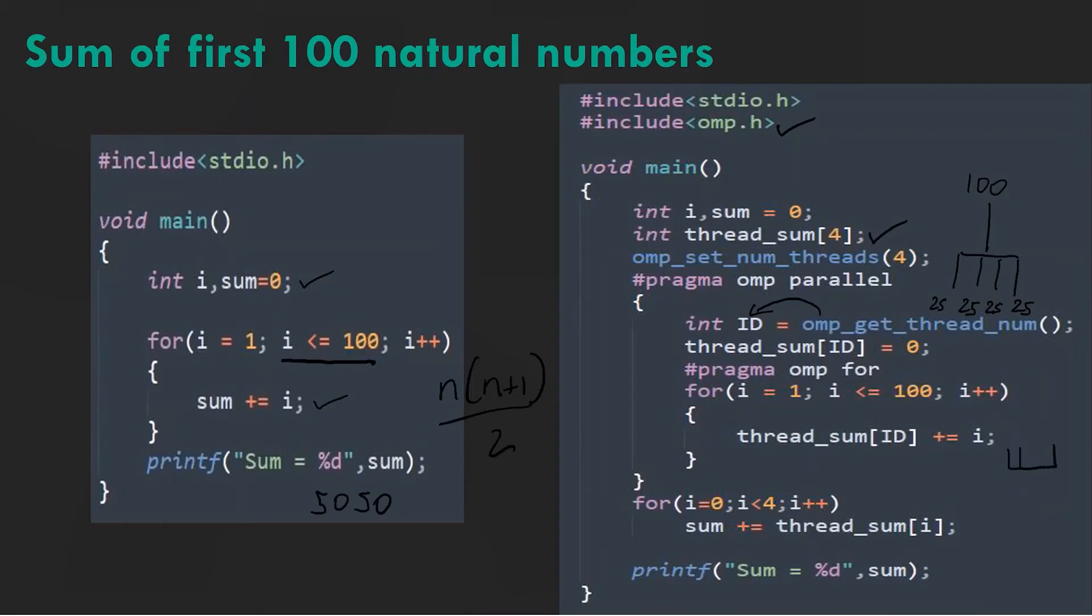Here we run another simple for loop four times adding the four sums calculated by the four threads and we print this sum. And just like that with a few more lines of code we have reduced a for loop to one-fourth of its time taken. Now try the simple code by yourself and don't forget to link OpenMP library using the -fopenmp flag during compilation on gcc. For other compilers please refer to the documentation.